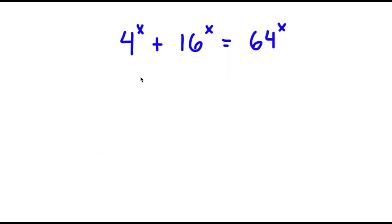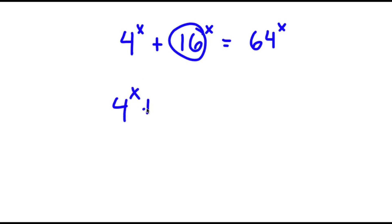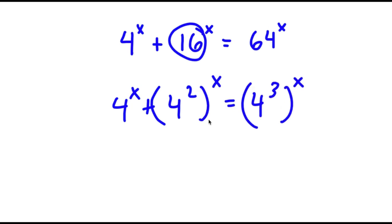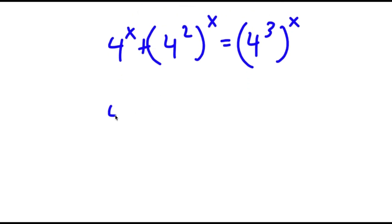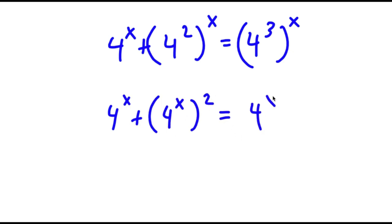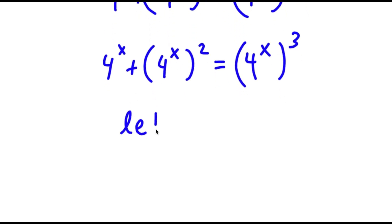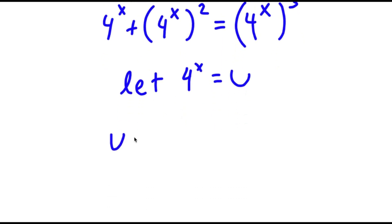In this problem, I have 4 to the power of x plus 16 to the power of x is equal to 64 to the power of x. Now 16 I can rewrite as 4 squared, and 64 I can rewrite as 4 to the power of 3. I'm going to rewrite this as 4 to the power of x squared and 4 to the power of 3x. Now I'm going to let 4 to the power of x equal the variable u. So now I have u plus u squared is equal to u to the power of 3.